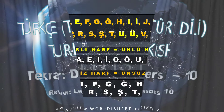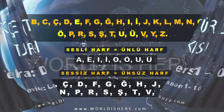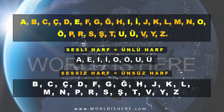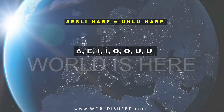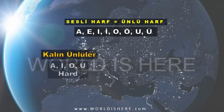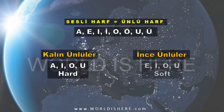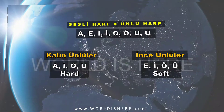First of all we learned the Turkish alphabet and we know that there are 29 letters in Turkish language and eight of them are vowels. After that we learned that we can see them in two different groups: kalın ünlüler and ince ünlüler — hard vowels and soft vowels. Do you remember?